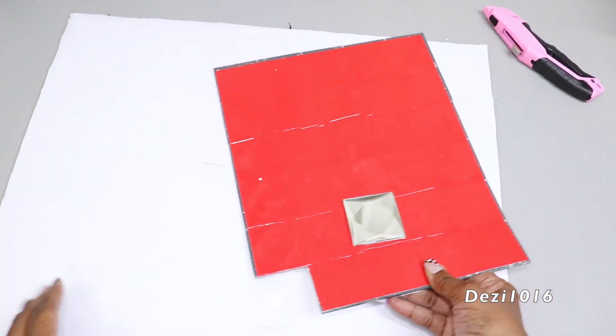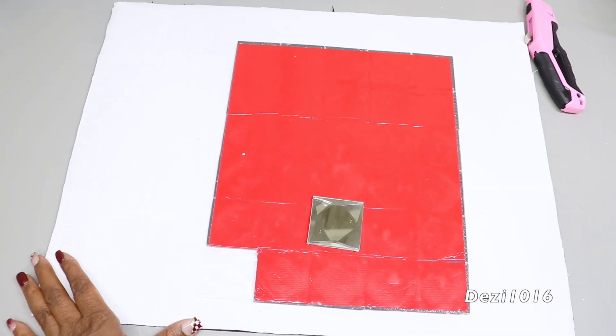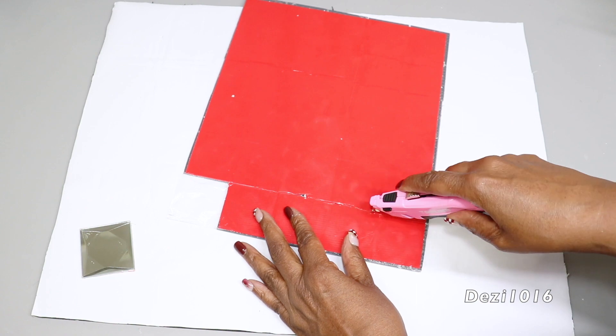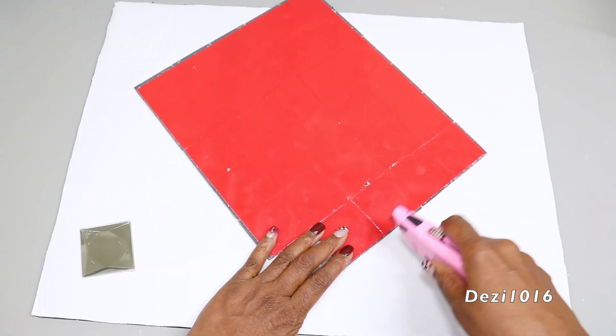I'm just going to place this on top of this board so that I can use my craft cutter and just separate them. I'm going to cut them away from each other and then separate them into single tiles.